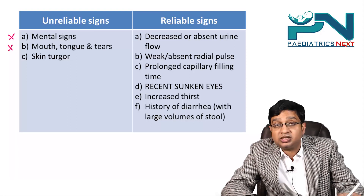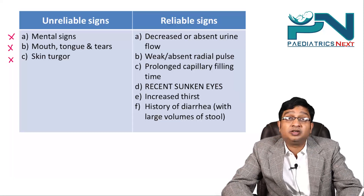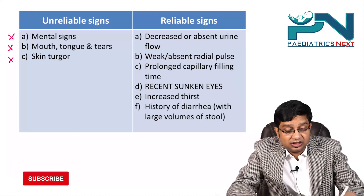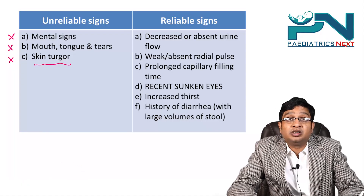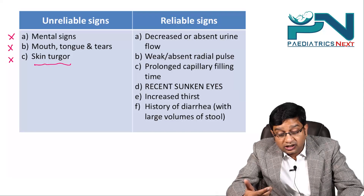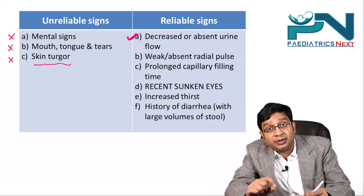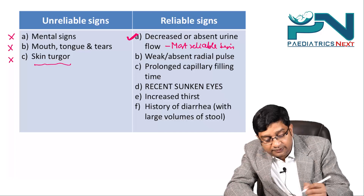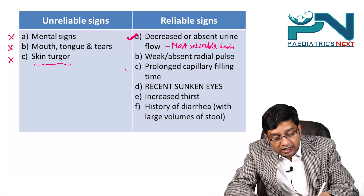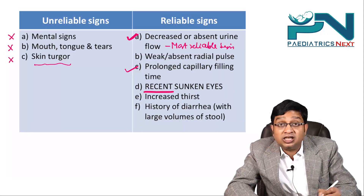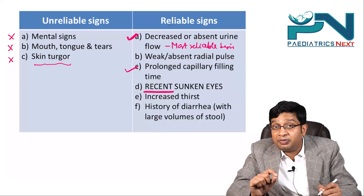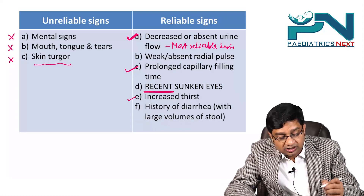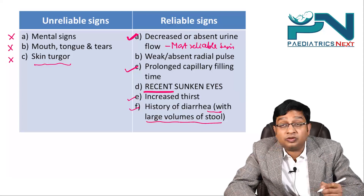Mouth, tongue, and tears are unreliable. Skin turgor is unreliable in marasmus because there are already loose folds of skin present. The reliable signs include: decreased or absent urine output (most reliable), weak or absent radial pulse, prolonged capillary filling time, recent sunken eyes, increased thirst, and history of diarrhea with large volumes of stool.